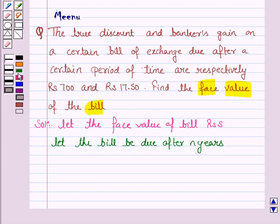Now the true discount is given by the formula S into R into T upon 1 plus R into T, where R is the rate of interest.